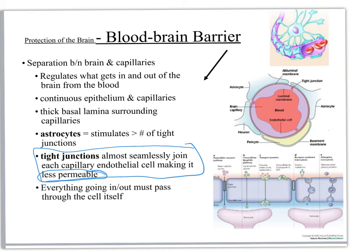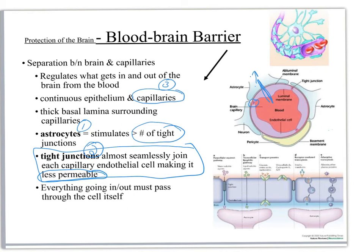The astrocytes themselves are important because they help to increase the barrier by releasing chemicals that increase the number of tight junctions. So we have the tight junctions, and then we have more of them as well, so now everything has to go through the cells. We've got astrocytes helping to form a barrier, tight junctions helping to form a barrier. In A&P 2 you're going to learn about different types of capillaries — the one we're going to use here is called a continuous capillary, and that also helps to form a barrier. And then finally, a thick basal lamina — this gooey stuff in between that also helps to create a really nice barrier.